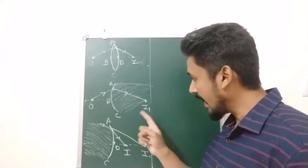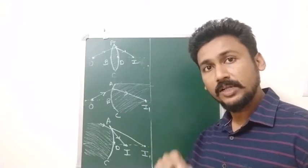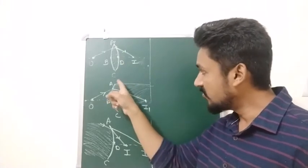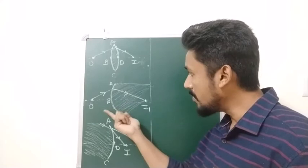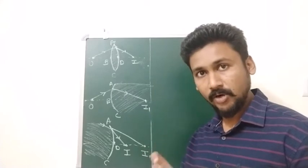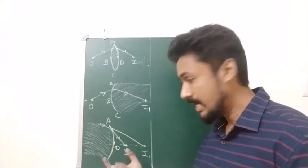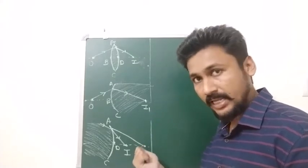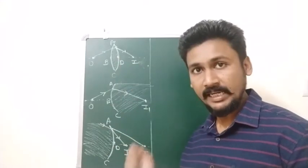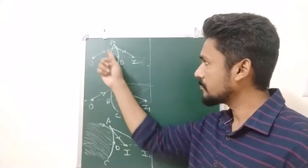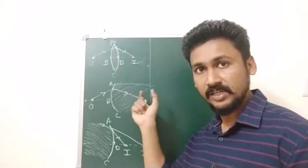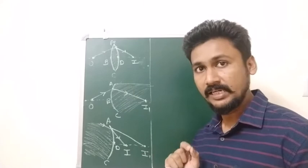This intermediate image I1 acts as a virtual object for the second surface ADC. The second surface then refracts this and forms the final image at I. The medium outside the lens has refractive index N1 and the lens material has refractive index N2. We now apply the spherical surface formula to each surface in turn.